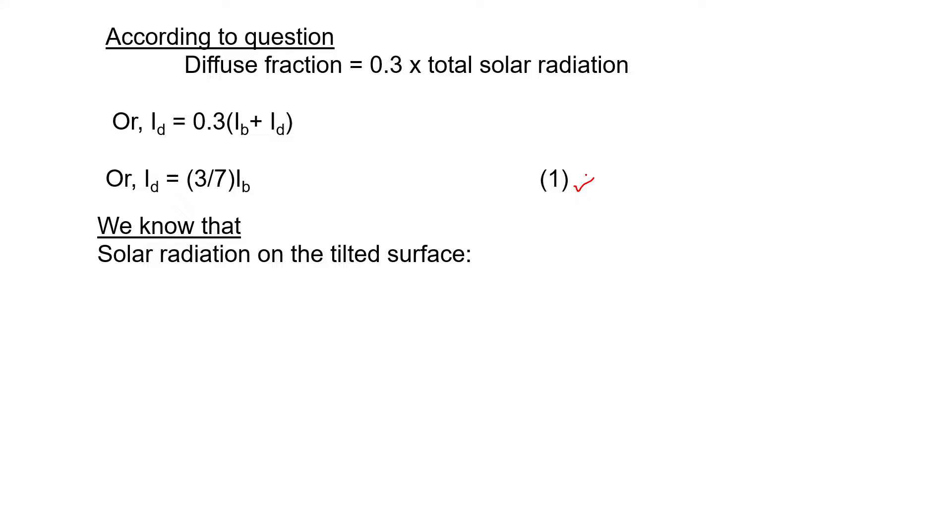Now we know that solar radiation on the tilted surface is given by the formula shown here by equation number 2.